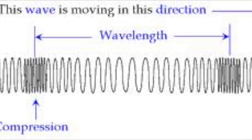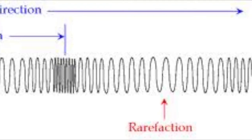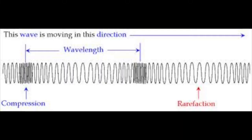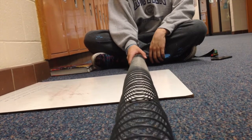The next type of wave is longitudinal waves, and these are waves in which the motion of the individual particles of the medium is in a direction that is parallel to the direction of energy transport. This can be demonstrated with a slinky being stretched and then pushed.